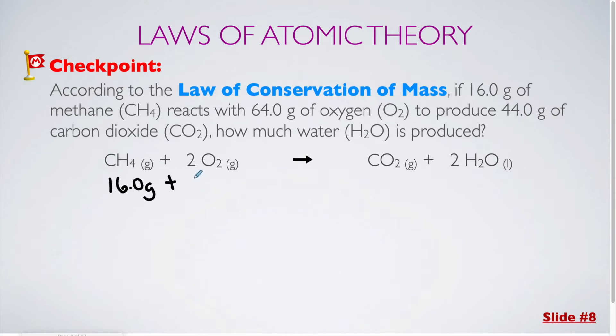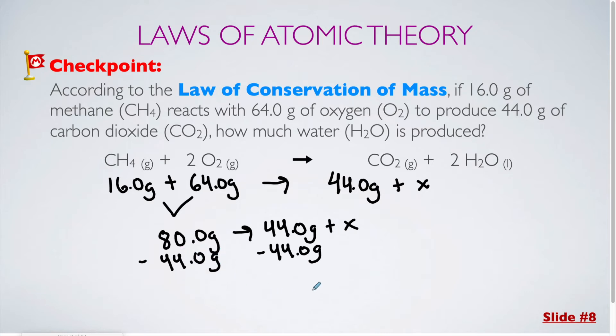It's reacting with 64.0 grams of oxygen. And then on this side, we are producing 44.0 grams of carbon dioxide and an unknown amount of water. So from here, we can simply solve the equation in order to determine the value for x. So if I were to combine these two numbers right here, that is a total mass of 80.0 grams. From here, we can subtract 44.0 grams from either side. And then we determine that x is equal to 36.0 grams of water.